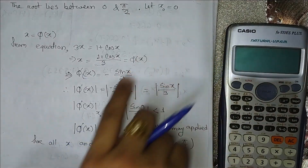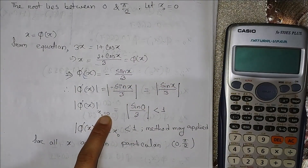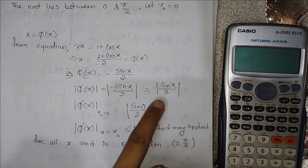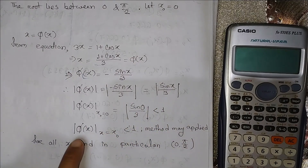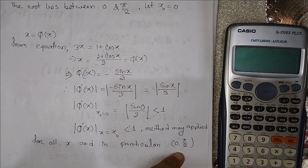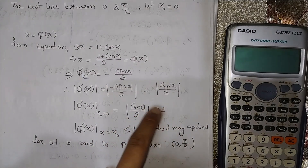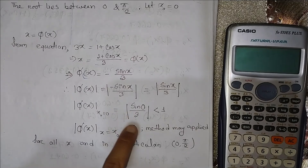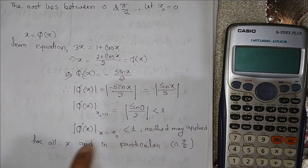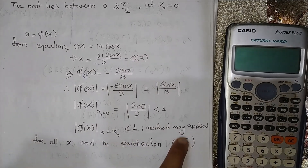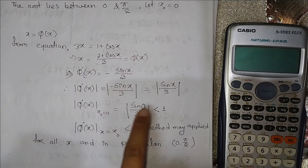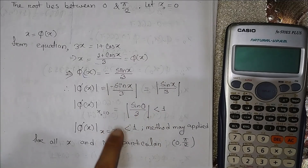We need the absolute value of phi'(x) to be less than 1. We check the interval: x between 0 and pi/2 will satisfy this condition. So 0 and pi/2 satisfy the convergence condition, and we can proceed with the iteration method.